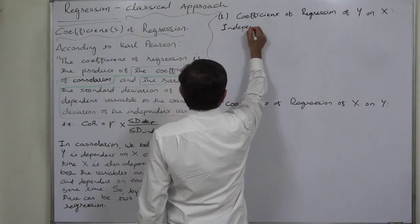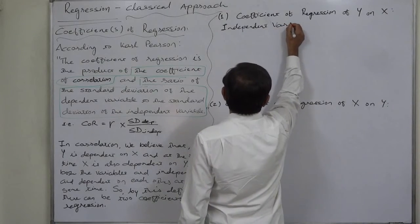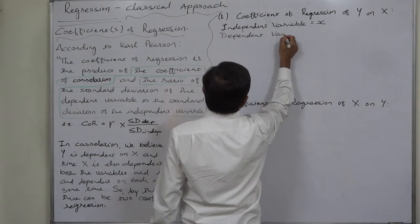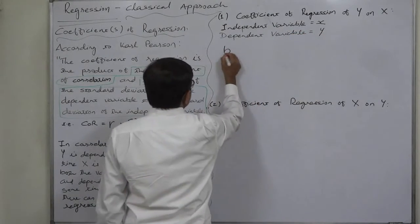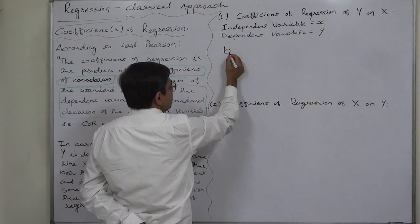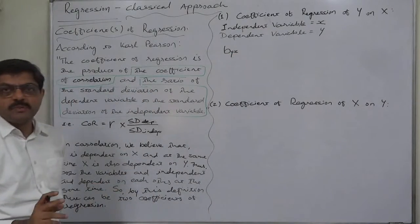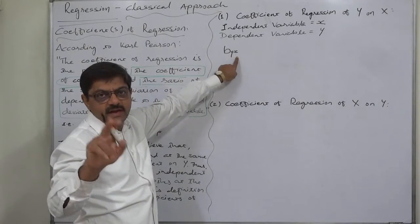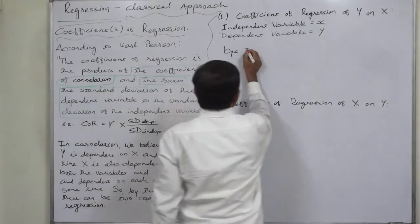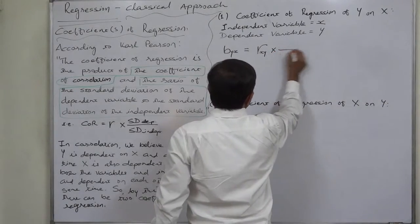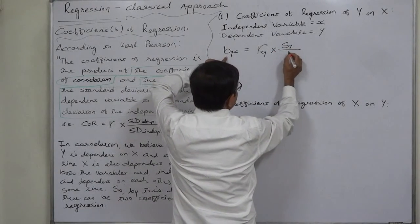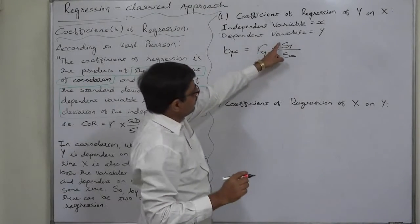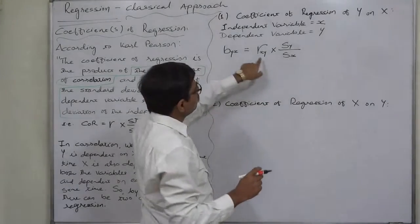In this case, independent variable is X and dependent variable is Y. So, the coefficient of regression — the notation is B of Y on X, simply known as BYX. B is the coefficient of regression, Y means Y is the dependent variable, and X means X is the independent variable. This equals the coefficient of correlation multiplied by the ratio of the standard deviation of the dependent variable to the standard deviation of the independent variable.